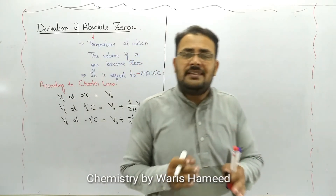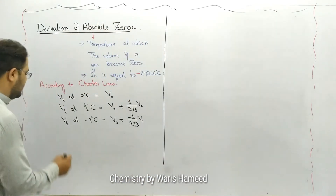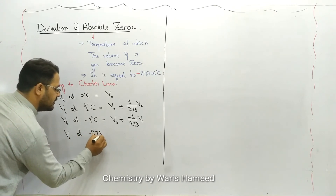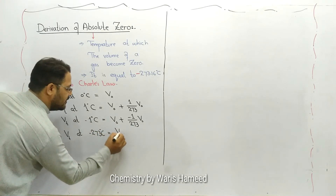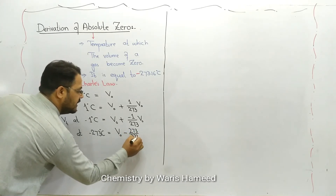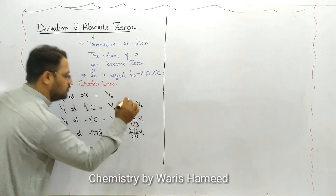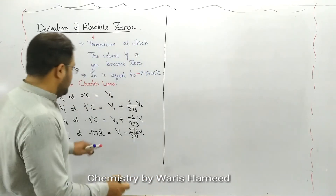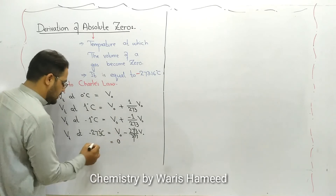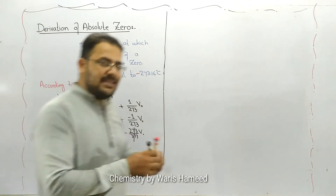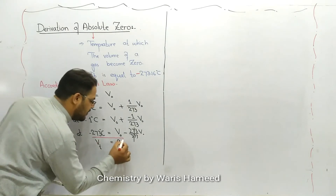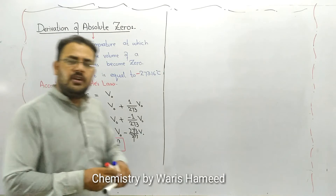When we decrease the temperature all the way to minus 273 degrees Celsius, V total at minus 273 degrees Celsius equals V₀ minus (273/273)V₀. The 273s cancel out, and V₀ minus V₀ equals zero. So the total volume of the gas at minus 273 degrees Celsius is zero. This is the mathematical form of absolute zero.